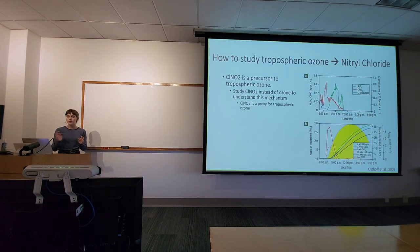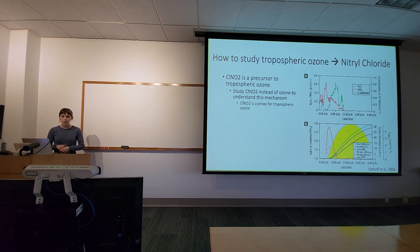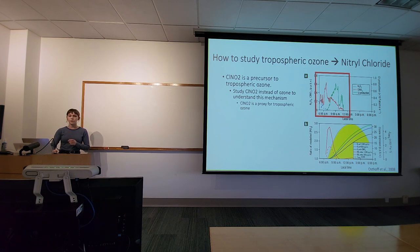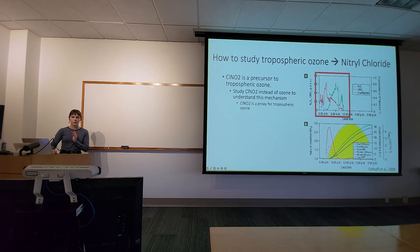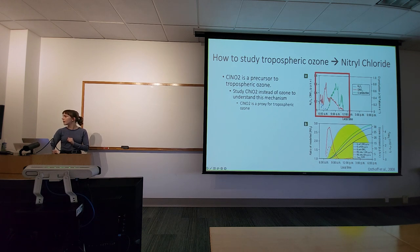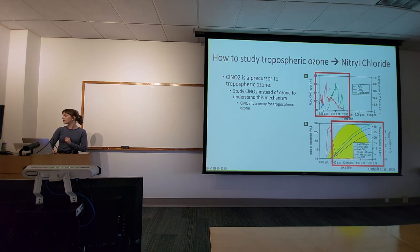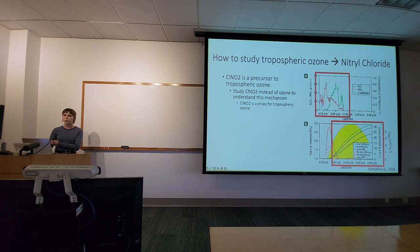To study tropospheric ozone, we focus on nitryl chloride (ClNO2), a precursor to tropospheric ozone. A figure from Osthoff et al. 2008 shows a temporal plot from Galveston, Texas: ClNO2 increases around 6am and then decreases to about noon, and around the time ClNO2 starts decreasing, we see an increase in tropospheric ozone. This demonstrates that ClNO2 leads to tropospheric ozone formation, so we use ClNO2 as a proxy.